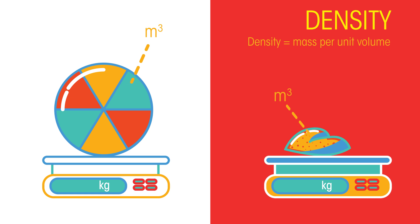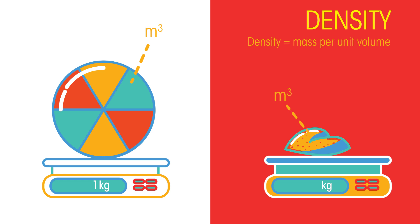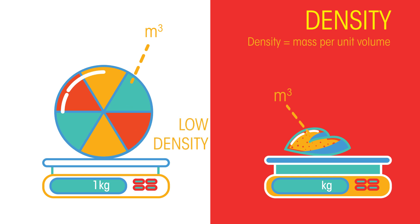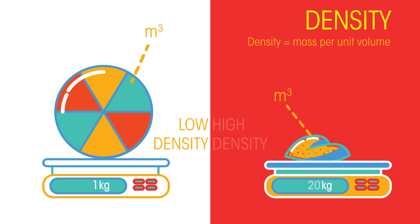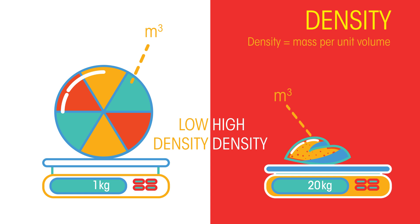So the big beach ball has a small mass but a big volume, meaning its density is very low, whereas the pebble is the opposite, lots of mass compacted into a small volume.